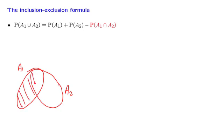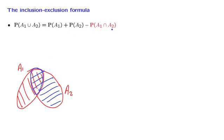We take the probability of the first set and add to it the probability of the second set. But then we realize that by doing so, we have double-counted this part of the diagram. And so we need to correct for that, and we need to subtract the probability of this intersection. And that's how this formula comes about.